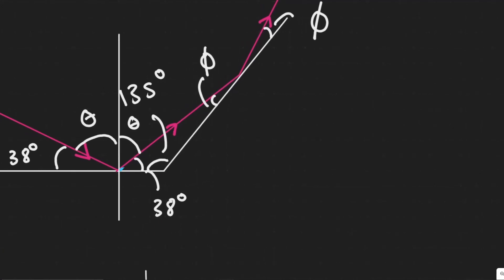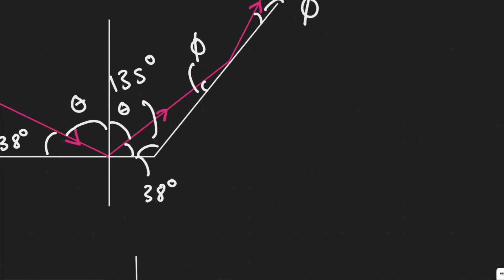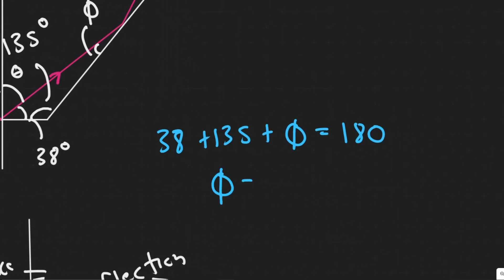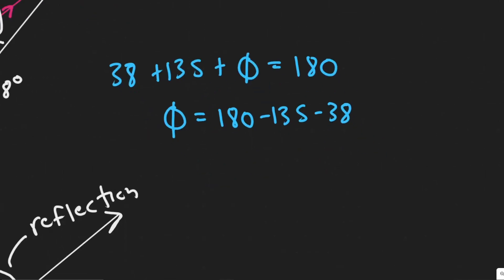What I want you to see is that these lines form a triangle. Triangles have angles that must add up to 180 degrees. We know one angle is 38 degrees, another is 135 degrees where the two mirrors meet, and phi is our only remaining angle. So: 38 plus 135 plus phi equals 180 degrees. That means phi equals 180 minus 135 minus 38, which gives us 7 degrees.